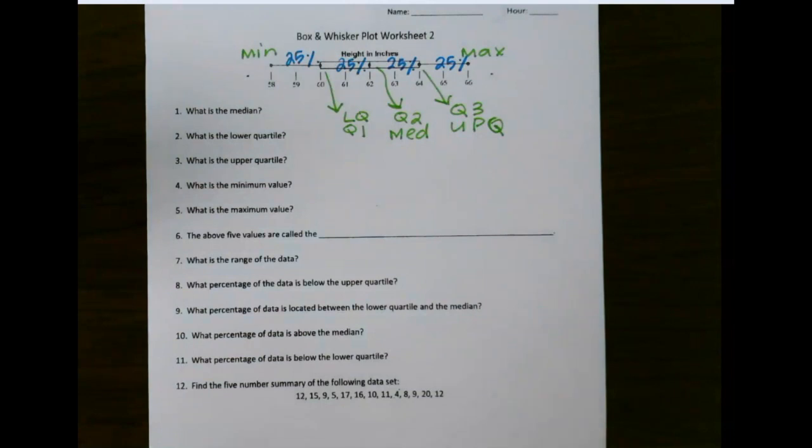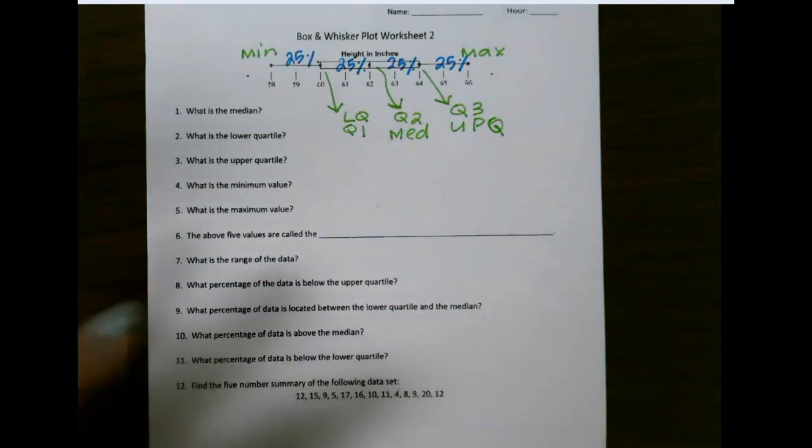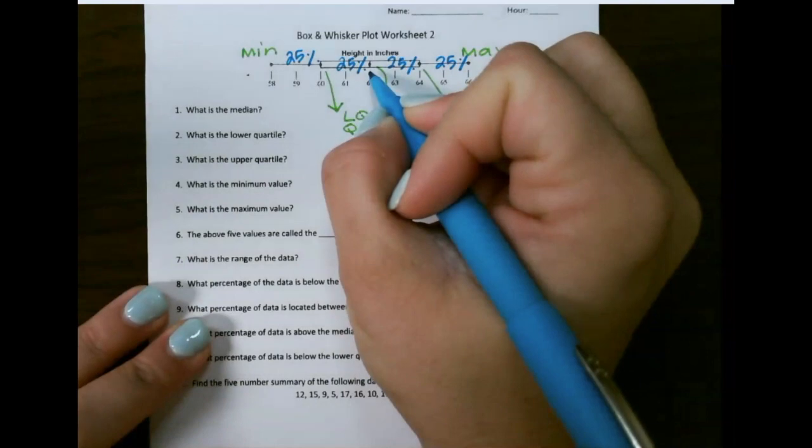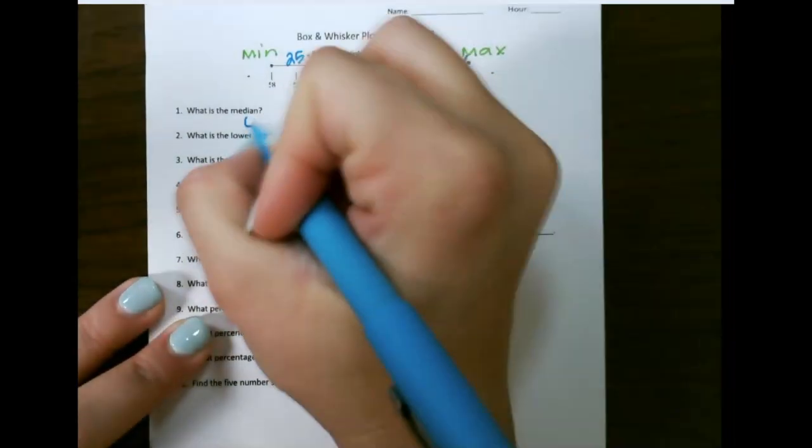So for the first question, what is the median? That's going to be the point that's in the middle of our five dots, and that would be right at 62.